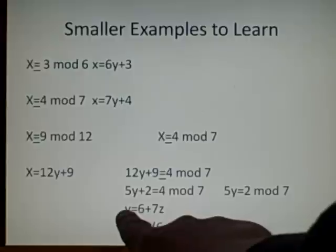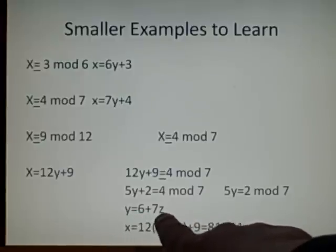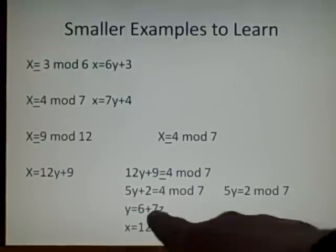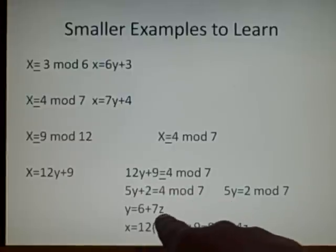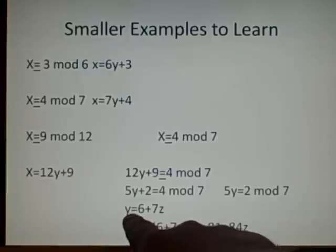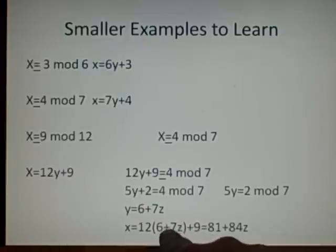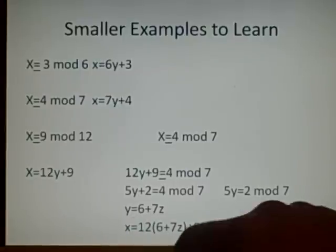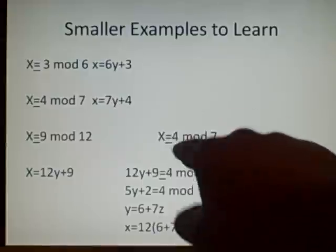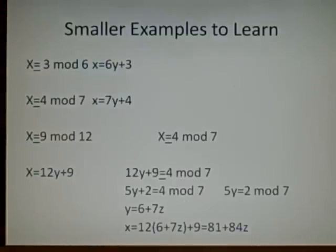So this is our general solution, y is 6 plus 7z. And then what we do with this y, because we've got the y this time, haven't we? And z is our new multiplier, we can't use the same one. We put this y back into our equation here, and multiply it out, and this will give us the general solution, which is 81 plus 84z, and this is the general solution for both of these. And you can try that by using different values for z.